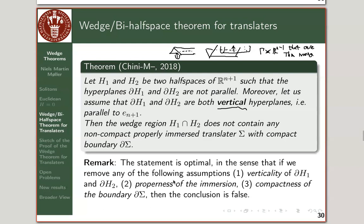Compactness of the boundary is also necessary: if you allow chopping along a non-compact boundary, the conclusion is false. For example, take half a Grim Reaper cylinder — it has a non-compact boundary — and you can easily place that inside a wedge-shaped region. So compactness of the boundary must be assumed for the theorem to hold.